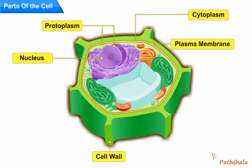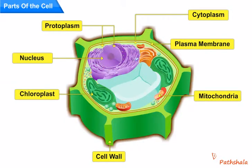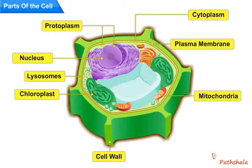Cell wall, plasma membrane, cytoplasm, chloroplast, mitochondria, lysosomes, etc. are the various parts of a cell. Now let us discuss in detail about the various parts of the cell.